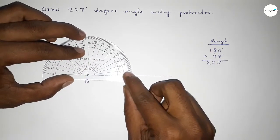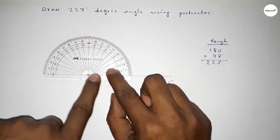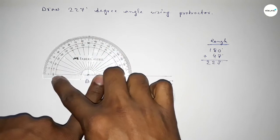So putting the protractor on the point B and counting 180 degree, so this is 180 degree.